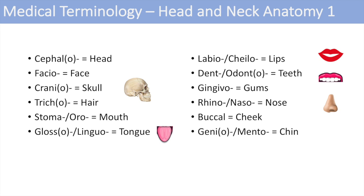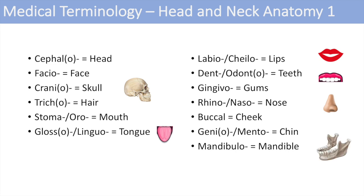The next one is genio or mento, which means chin. You might have heard of the mental foramen — that's a hole in your mandible near your chin where arteries and nerves come out. Genioglossus is a muscle near the chin. The next one is mandibulo, which means mandible, your lower jaw. And then the maxilla — the bone that supports your upper teeth.